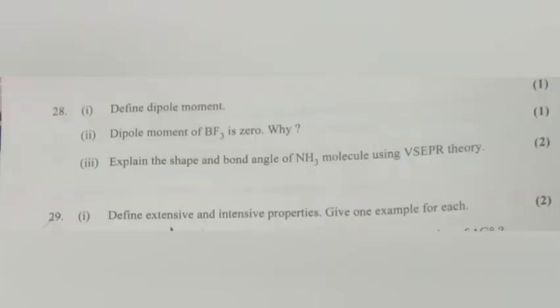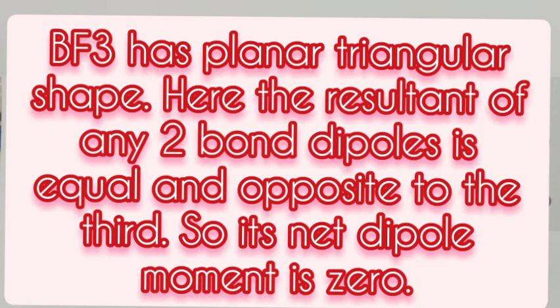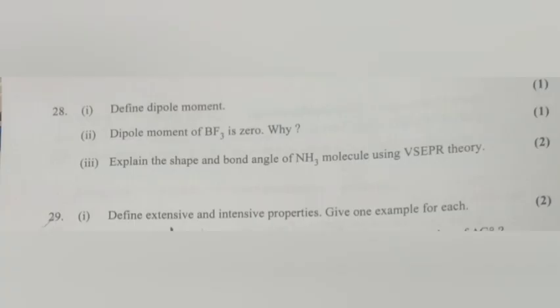Question 2: Dipole moment of BF3 is zero. Why? Answer: BF3 has planar triangular shape. Here, the resultant of any two bond dipoles is equal and opposite to the third, so its net dipole moment is zero.